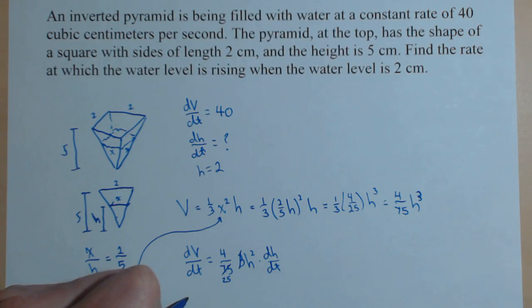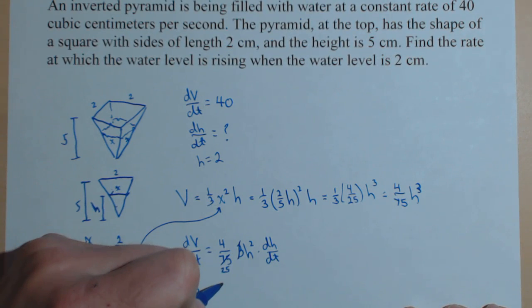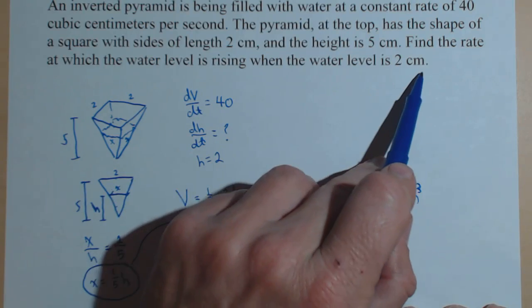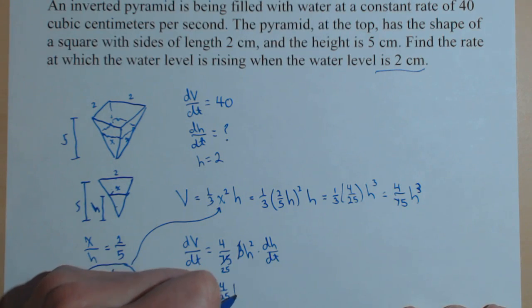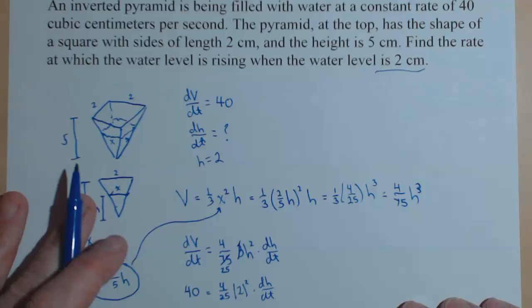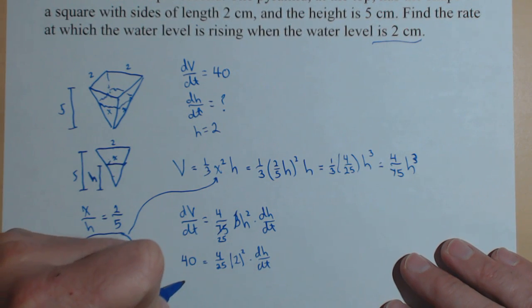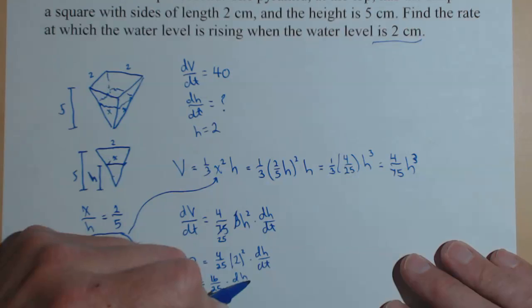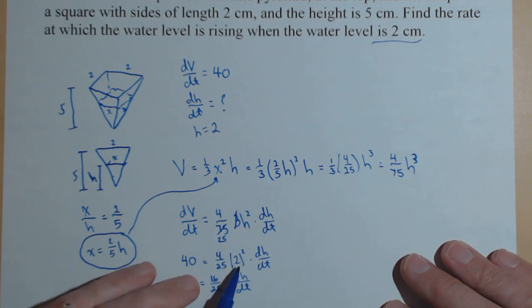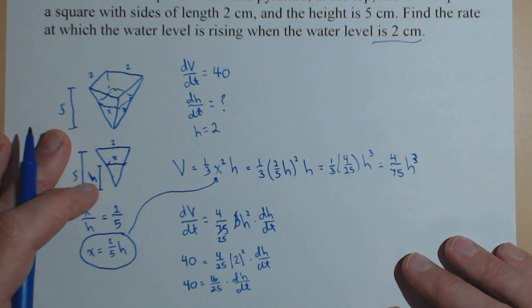Now we can go ahead and plug in our values. dv dt we said was 40. So I have 40 equals 4 over 25 times h squared. We were doing it specifically when the height was 2 centimeters. So 2 squared, and dh dt is what we're looking for. So we have 40 equals 16 over 25 times dh dt. Squaring the 2 gives you 4 times 4 over 25 is 16 over 25.